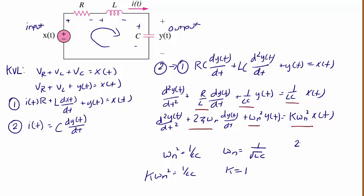Since 2 zeta omega sub n equals R over L, and omega n equals 1 over the square root of LC, we have that zeta equals R over 2 times the square root of C over L.